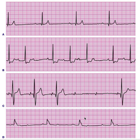For second degree Mobitz Type 2, think about cardiac surgery and myocardial infarction. For third degree, consider cardiac surgery, congenital complete heart block, myocardial infarction, toxic drug effects, severe hypoxia, and acidosis. Don't just interpret the EKG — think about what is the underlying cause, and then address that cause so you can correct the EKG.